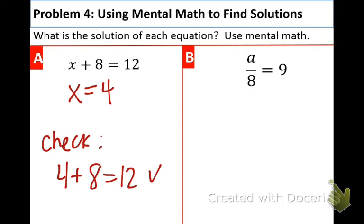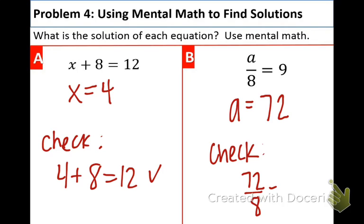Now, part B. A divided by 8 equals 9. The question is, what number divided by 8 equals 9? Using our math facts, A equals 72. Let's check real quick. 72 divided by 8 equals 9. Yes. And we are done with that one.